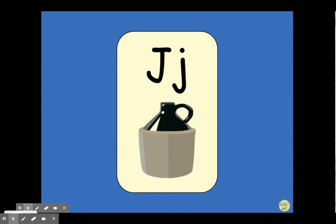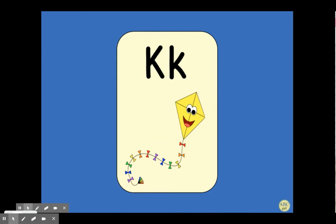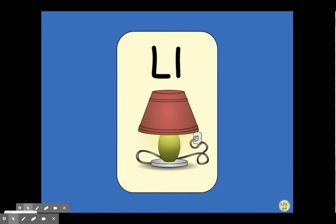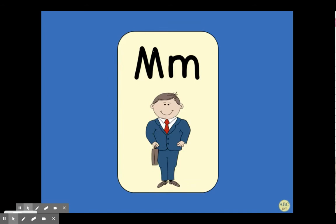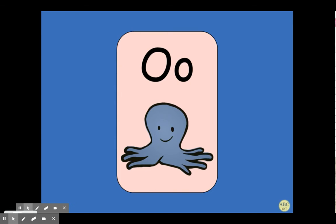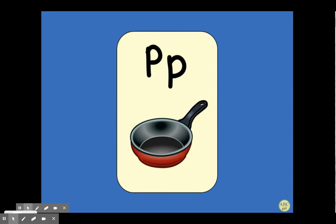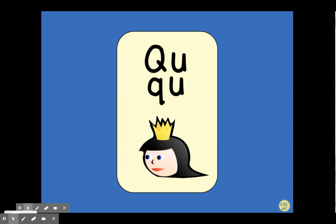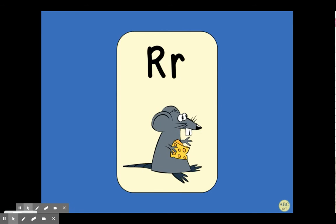J, jug, /j/. K, cake, /k/. L, lamp, /l/. M, man, /m/. N, nut, /n/. O, octopus, /o/. P, pan, /p/. Q-U, queen, /q/. R, rat, /r/.